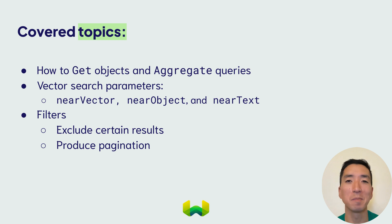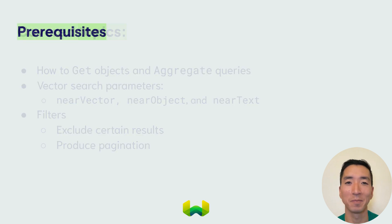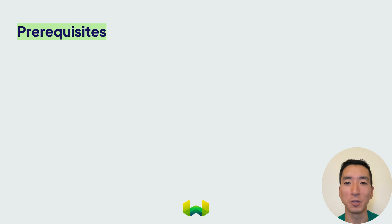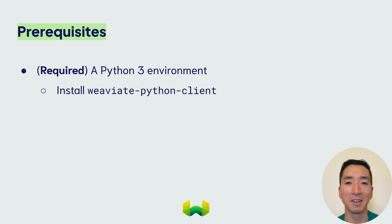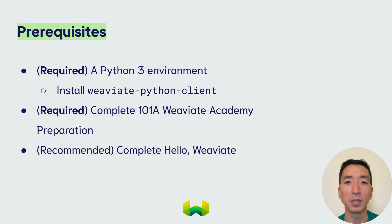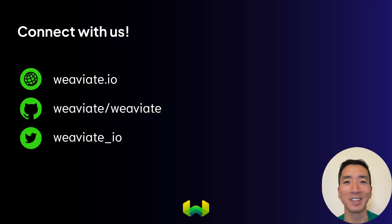By the end of this unit, you'll have a big complement of tools at your disposal, which you can use to find information you want from Weviate. We'll be using Python in this unit, so before we begin, make sure that you have a Python 3 environment set up with the Weviate Python client library installed. Please also make sure to take a look at the prerequisite unit listed below. Now that we've set the scene, let's get started. We'll see you in the next section.